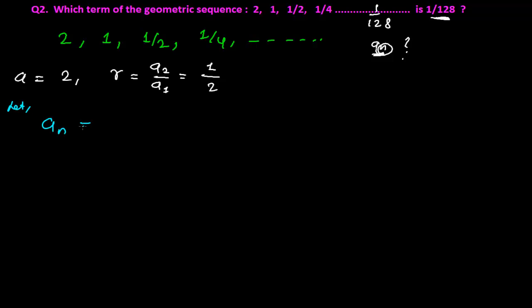And recently we had learned the formula for the nth term, and that is a times r to the power (n-1) equals 1/128. Now we have all the values, so let's put them in. We know the a, we know the r.